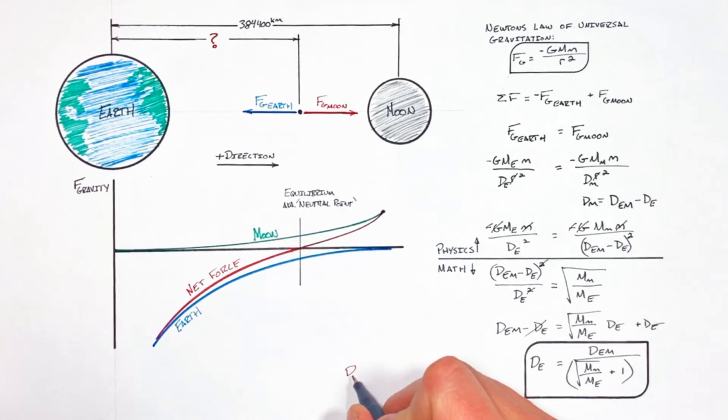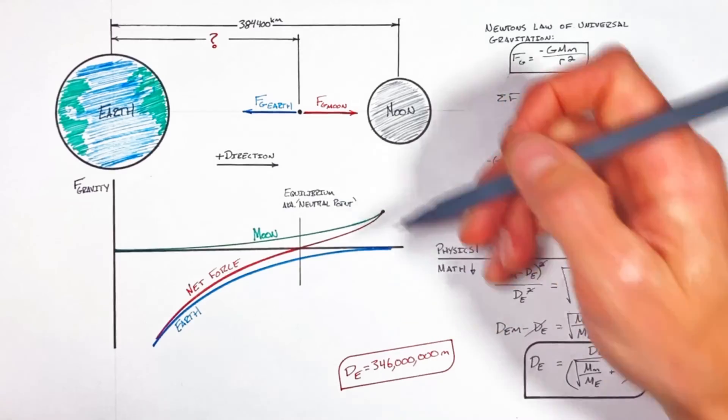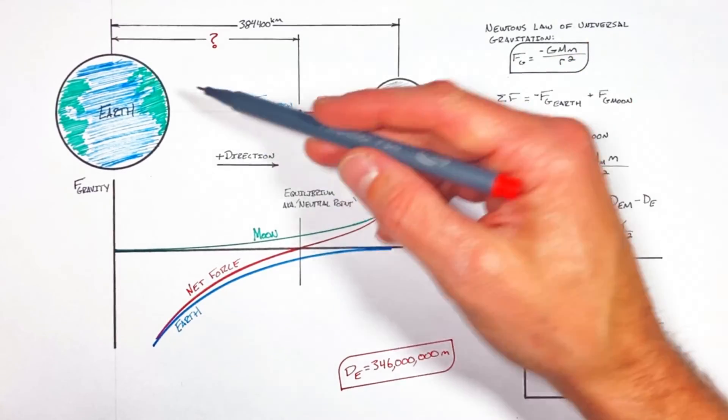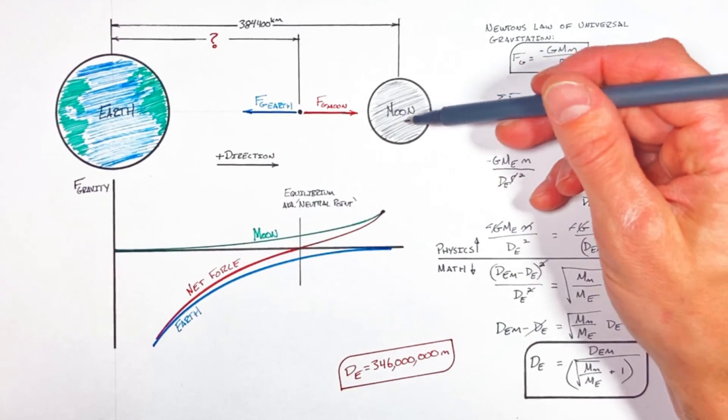And if we plug in the values for the mass of the Earth, Moon, and the Earth-Moon distance, we find the neutral point is actually about 90% of the way between the Earth and the Moon.